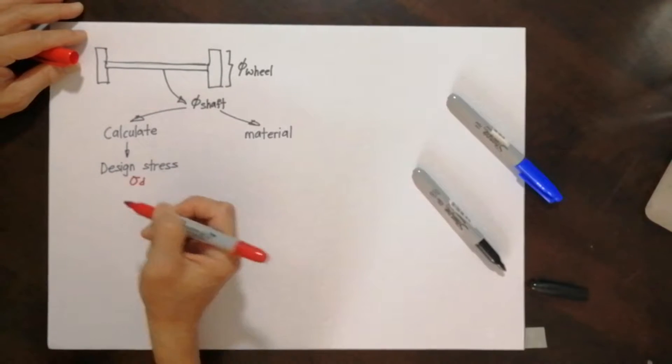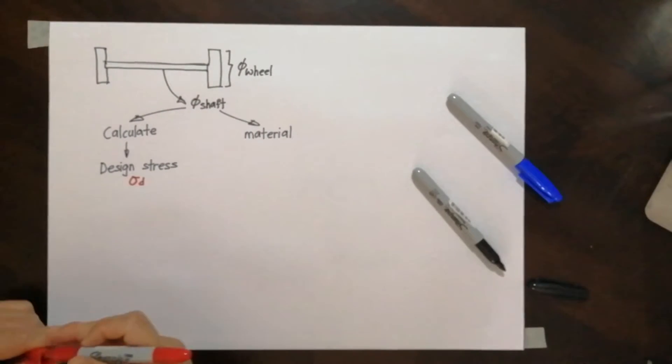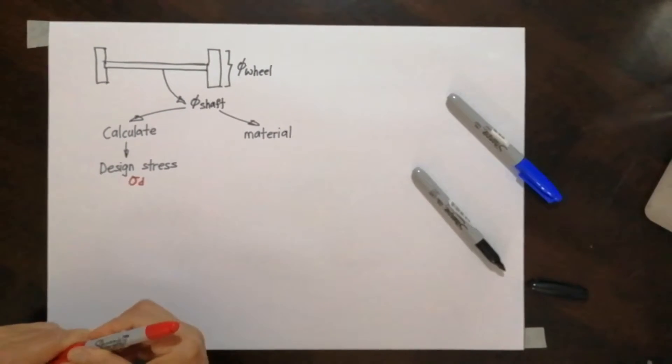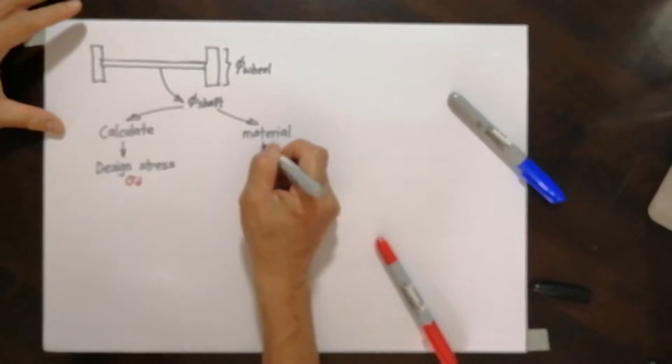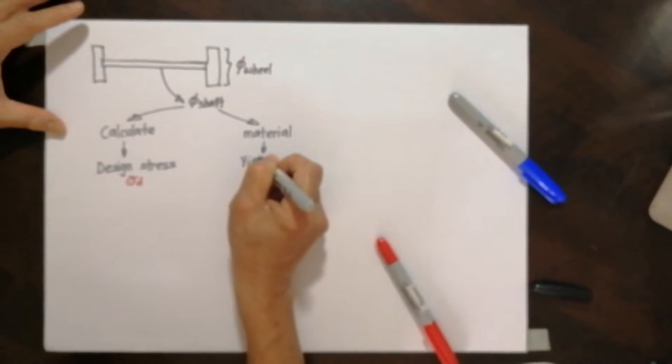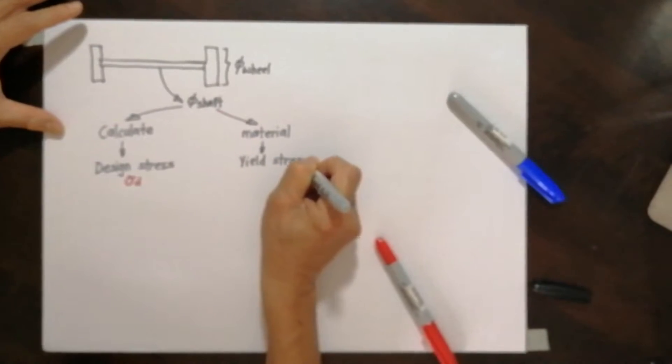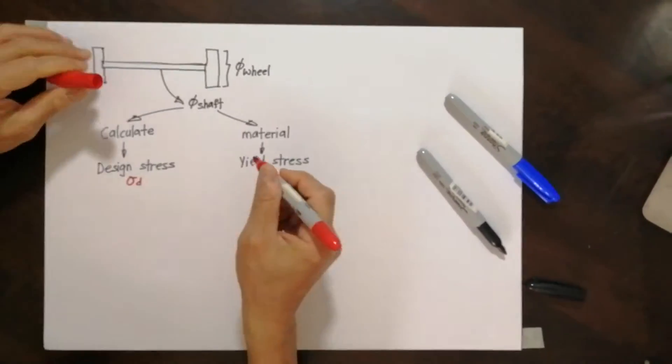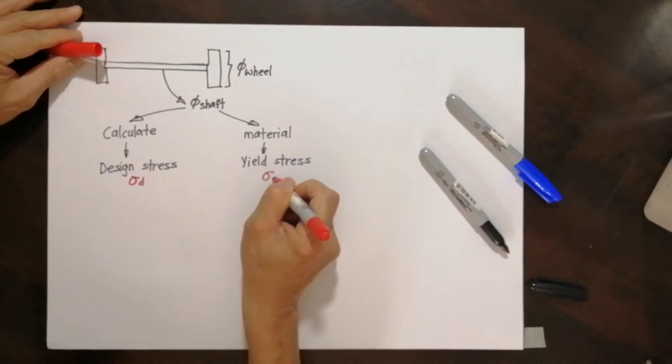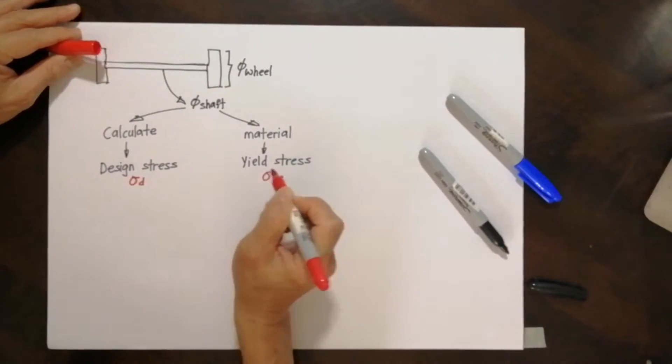Now for the material, we have a material property we call the yield stress. You have studied this in year one. Yield stress is written as Sigma YS.